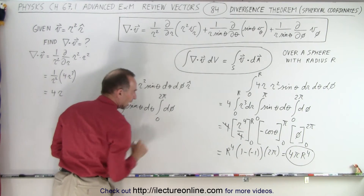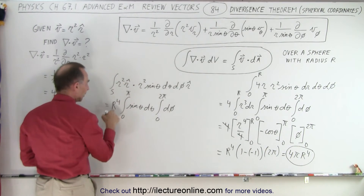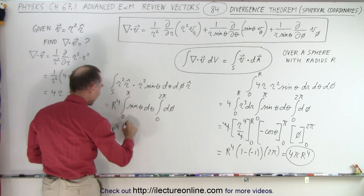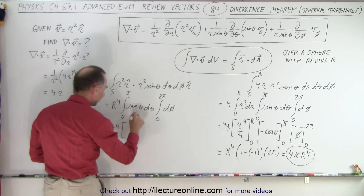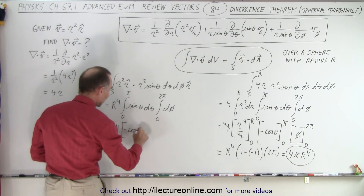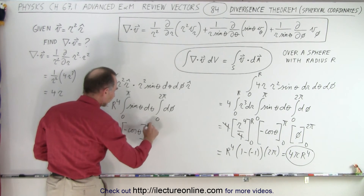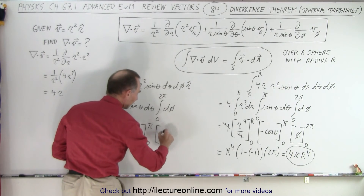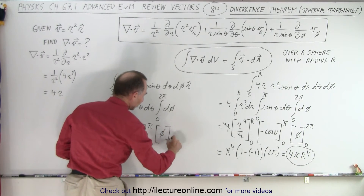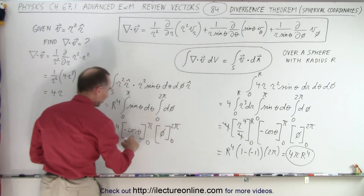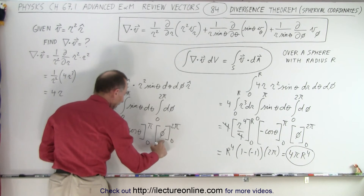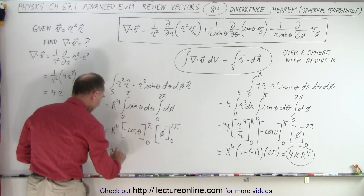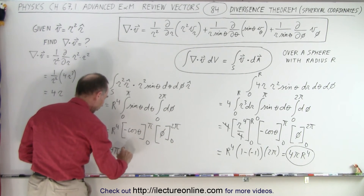This looks exactly the same as before. We have r to the fourth times negative cosine of theta evaluated from 0 to π, times phi evaluated from 0 to 2π. That gives 2 times 2π, which is 4π, so the surface integral equals 4πr⁴.